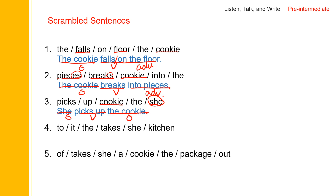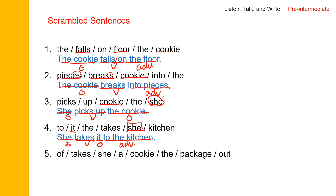Number four: it or she can be the subject. Let us use she as the subject. She takes what? She takes it to the kitchen. She is the subject, takes is the verb, it is the object, and to the kitchen is the adverbial phrase.